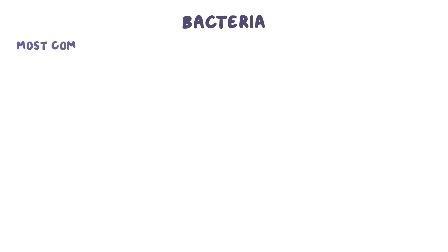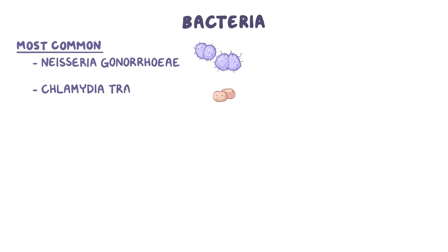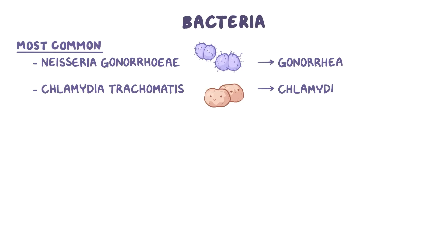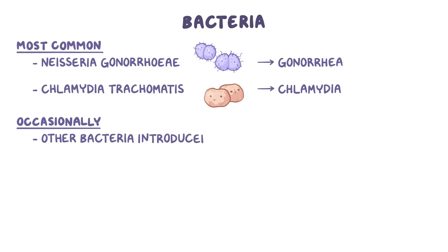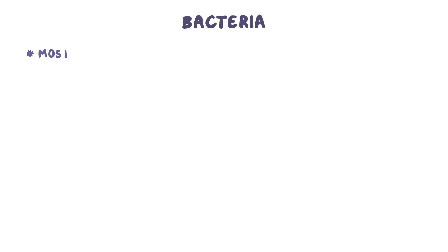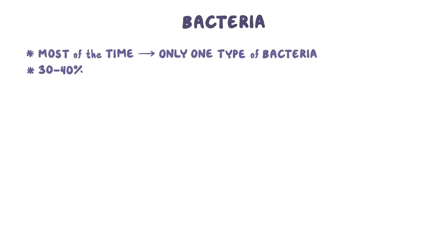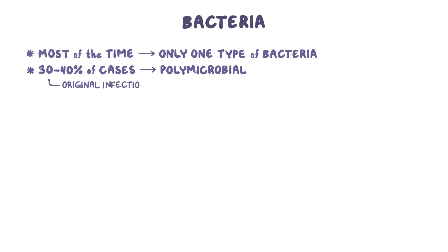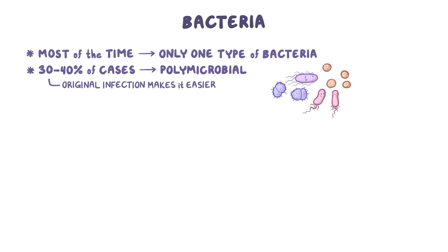There are many different bacteria associated with PID, but the most common are Neisseria gonorrhoeae and Chlamydia trachomatis, which are responsible for the sexually transmitted infections gonorrhea and chlamydia. Occasionally, PID can be caused by other forms of bacteria introduced into the reproductive tract by surgery, abortion, or even normal vaginal childbirth. Most of the time the infection is caused by one type of bacteria, but in 30-40% of cases it becomes polymicrobial, as the original infection makes it easier for other bacteria to settle into the reproductive tract.